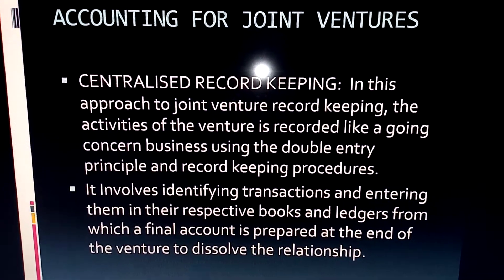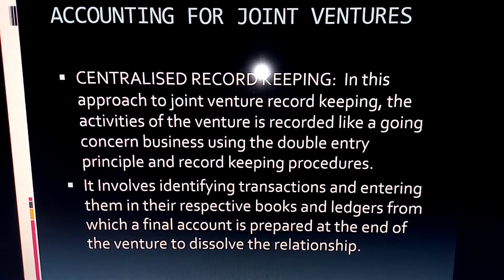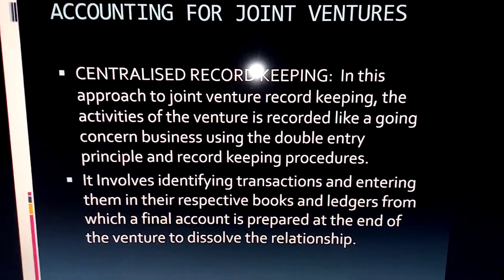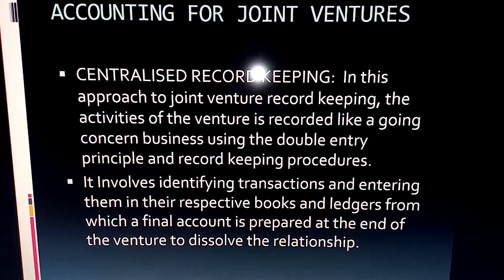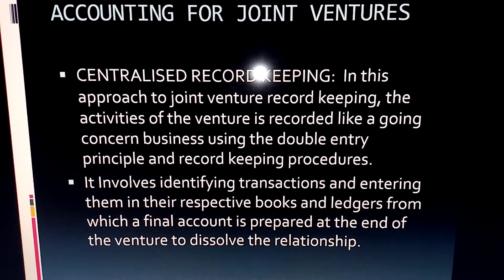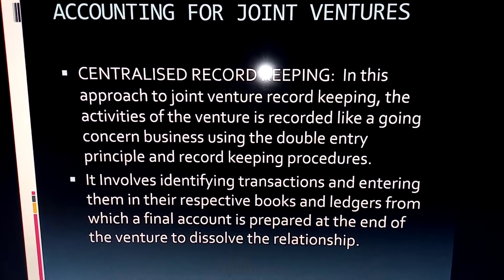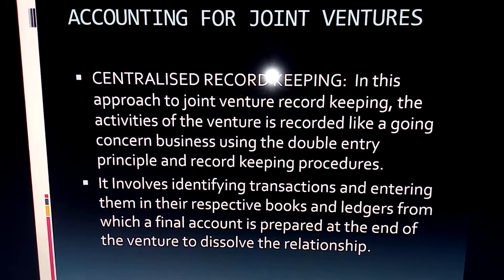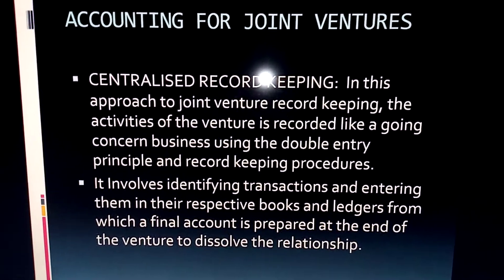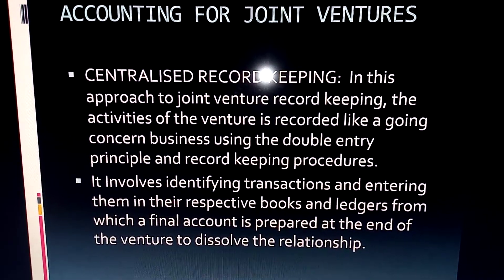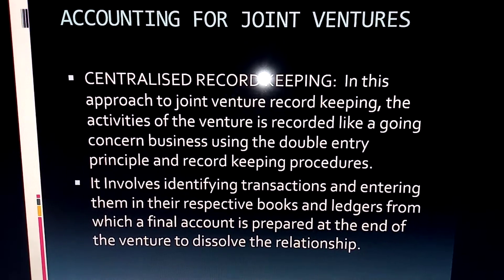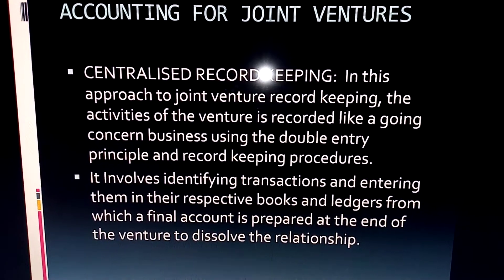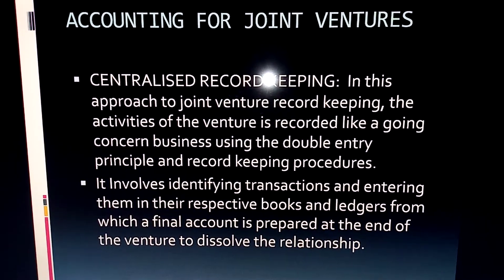The next method is centralized record keeping. When we say centralized, we keep records as though the business will exist for a long period, adopting the usual double-entry principles. We identify transactions, enter them in their respective ledgers, prepare a trial balance if possible, or do the final accounts directly. At the end, profit is ascertained through the profit and loss account, shared among the venturers, and then the relationship is dissolved.